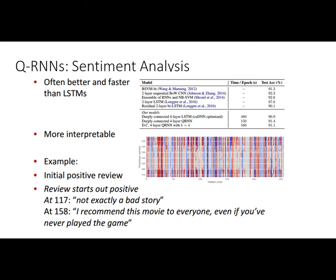When applied to language modeling, the Quasi-RNN was better and up to 17 times faster, depending on sequence length and batch sizes. For sentiment analysis, it was again better and faster than LSTMs, and also more interpretable. The activation at each neuron is not strongly affected by previous hidden states, so you can attribute it to the particular word. For example, in a review, activations changed from positive to negative at a phrase like 'not exactly a bad story,' then turned positive again at 'I recommend this movie to everyone.'